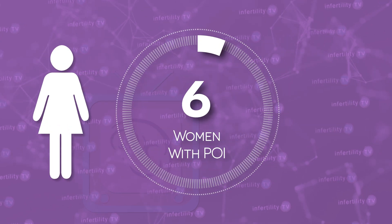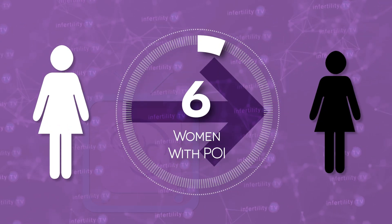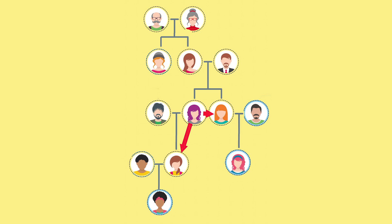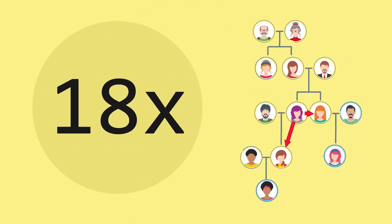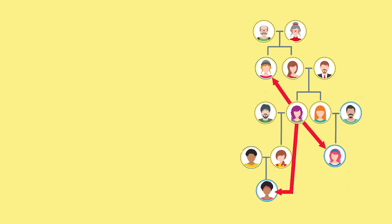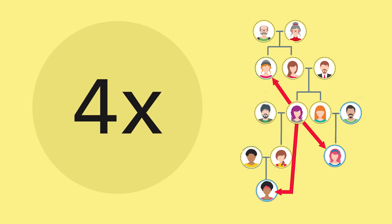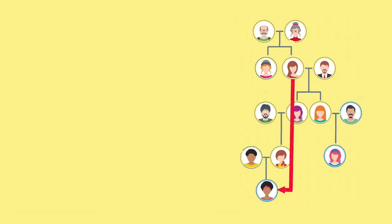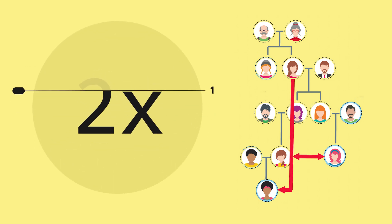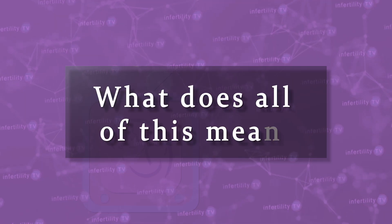What did they find? About 6% of the women with POI had a relative with POI also — way more than would be expected, since premature ovarian insufficiency is found in less than 1% of women overall. Close relatives were more likely to be affected. For example, a first-degree relative such as a daughter or sister was over 18 times more likely to have ovarian insufficiency. A second-degree relative such as a granddaughter, aunt, or niece was over 4 times more likely to have POI.